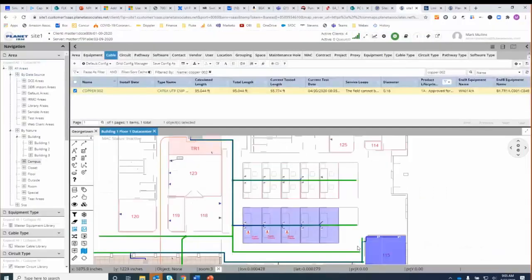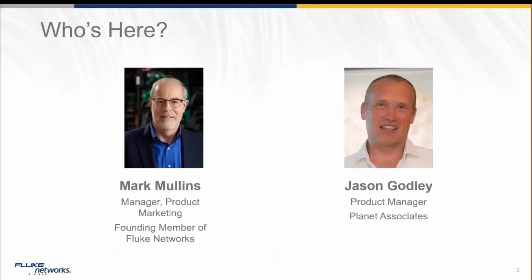What we're showing here — and I think this is really exciting — is that we can go from a network map all the way down to a wire map with just a very few clicks. That's the cool part about the integration of this product. Before we get too much further, I'm going to introduce myself: I'm Mark Mullins, manager of product marketing at Fluke Networks. I've got Jason Godley on the phone, who is an expert on the Planet IRM software.